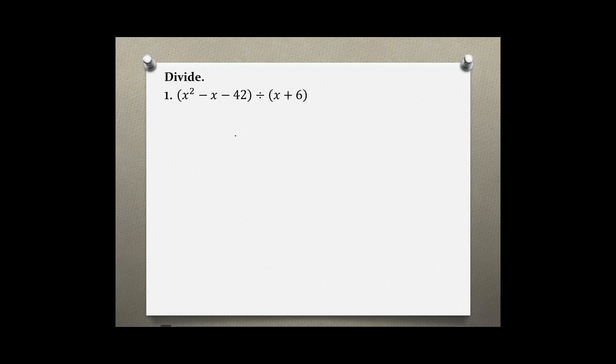This is a long division problem where we are dividing polynomials. So this first part is the dividend and the second part is the divisor. When we are using long division, we have to rewrite our division problem by starting with the divisor. So x plus 6. And then we write our fraction bar. And inside the fraction bar, we write the dividend. x squared minus x minus 42.